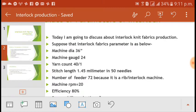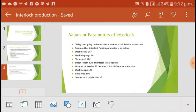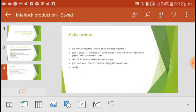Stitch length 1.45 millimeter in 50 needles, number of feeder 72 because it is a rib interlock machine, machine RPM 20, efficiency 80%. So one shift production equal to what? One shift equal to eight hours. Then calculation.